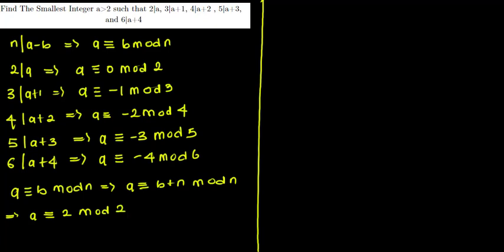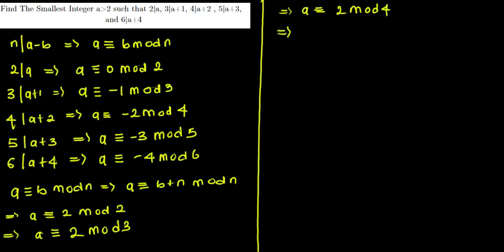Similarly, a ≡ −1 (mod 3) implies a ≡ 2 (mod 3); a ≡ −2 (mod 4) implies a ≡ 2 (mod 4); a ≡ −3 (mod 5) implies a ≡ 2 (mod 5); and a ≡ −4 (mod 6) implies a ≡ 2 (mod 6).